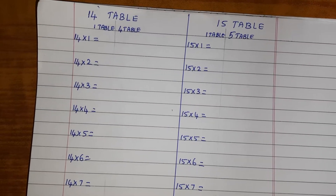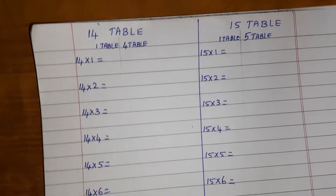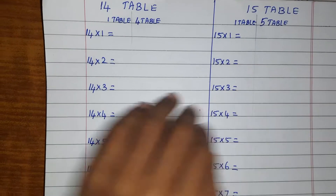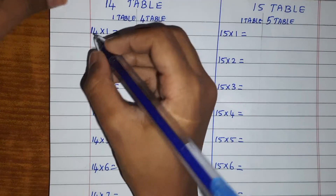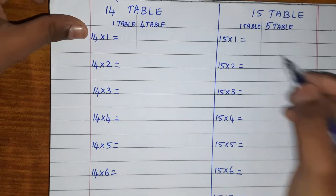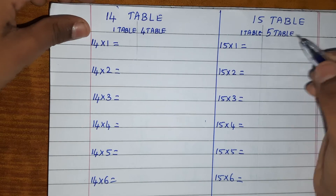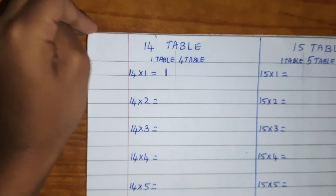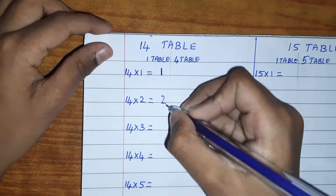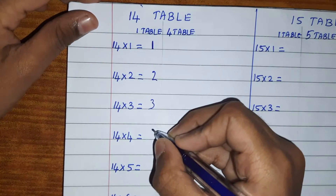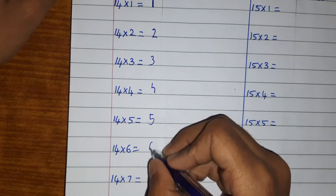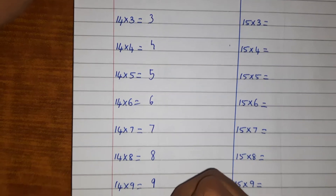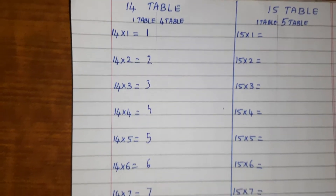First, I wrote before like this: one table, four table, one table, five. Okay, then here's one, then four, then one, then five. Let's start writing it. One — it's like a baby — okay: six, seven, eight, nine, and ten. Ten always comes for 14.